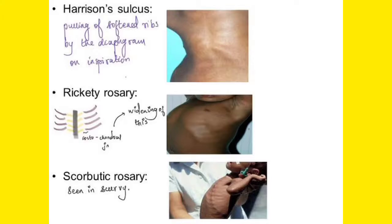Harrison's sulcus is a sulcus formed because of the pulling of softened ribs. When the patient has decreased calcium or phosphorus, the ribs become softened. During inspiration, the diaphragm pulls the softened ribs, causing a sulcus known as Harrison's sulcus — a very important feature of rickets.